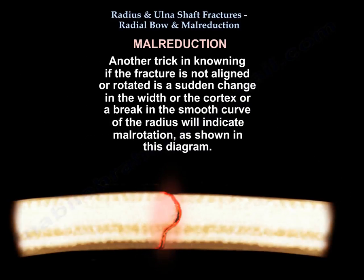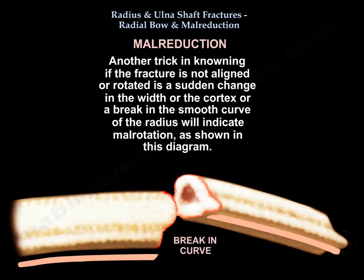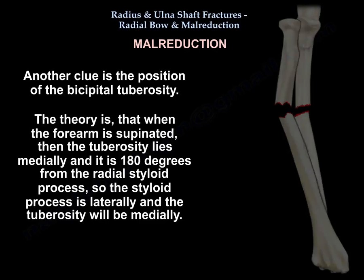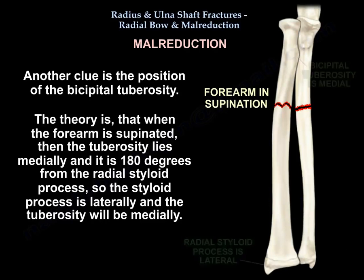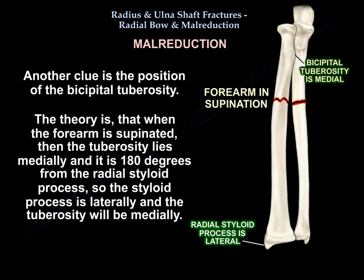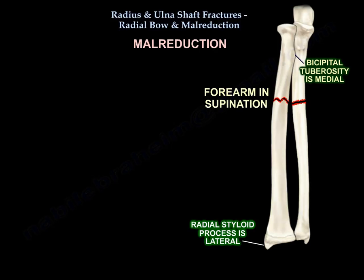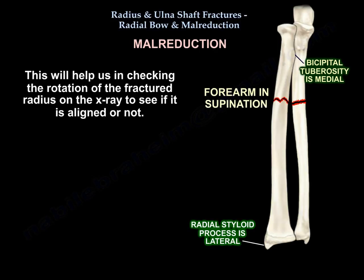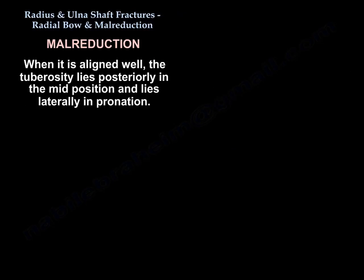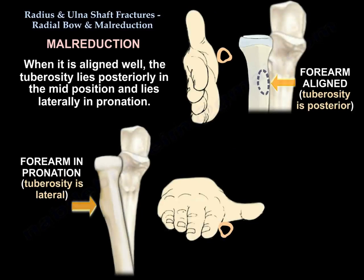A sudden change in the width of the cortex or a break in the smooth curve of the radius indicates malrotation, as seen in this diagram. Another clue is the position of the bicipital tuberosity. When the forearm is supinated, the tuberosity lies medially and is 180 degrees from the styloid process — the styloid is lateral, and the tuberosity is medial. This helps check the rotation of the fractured radius on X-ray to assess alignment.